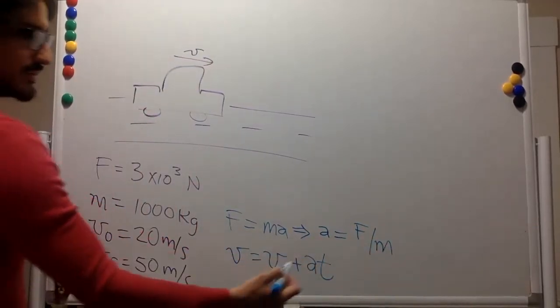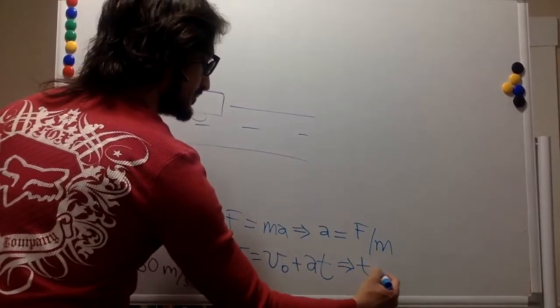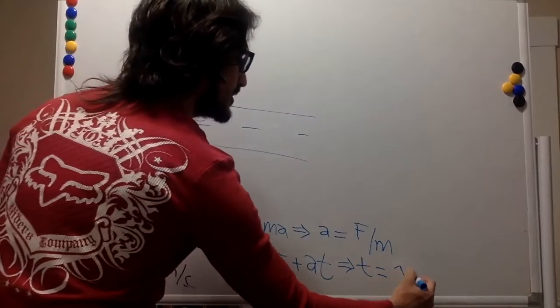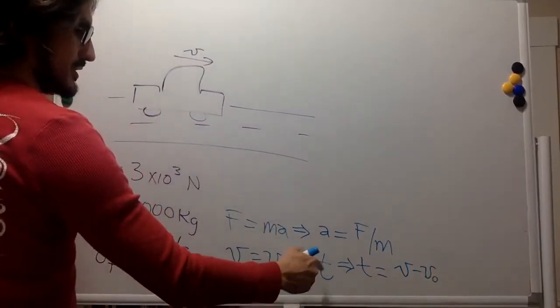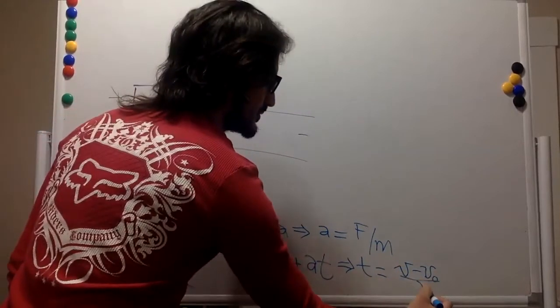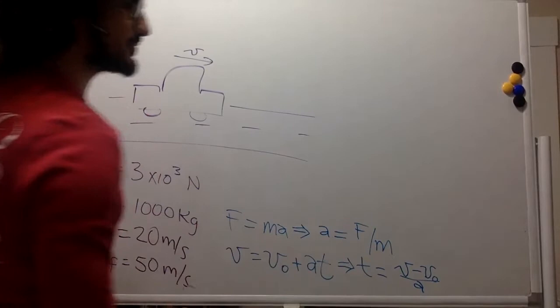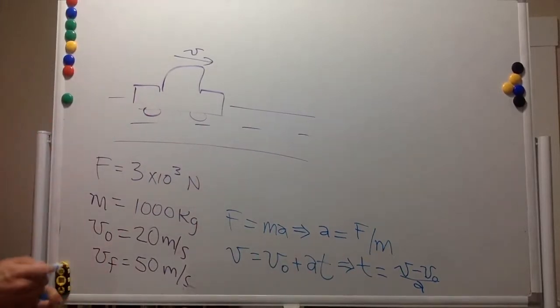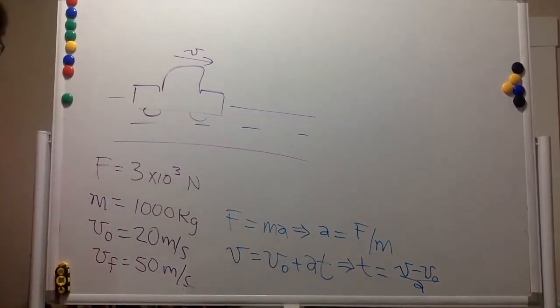And if we want to get the time, the time is going to be equal to v minus v initial divided by the acceleration. So we just need to calculate the acceleration in order to solve the problem.